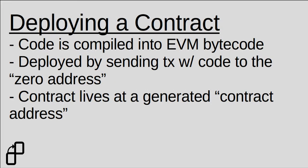So how are smart contracts actually deployed on the network? Code written in a high-level language, the most popular being Solidity, is compiled into an intermediate language called EVM bytecode. The code is actually deployed to the Ethereum network by sending a transaction with this code to a special address on the network called the zero address. The contract then lives at a generated contract address that is owned by that contract, not an external party like an externally owned account that you would find in your wallet.